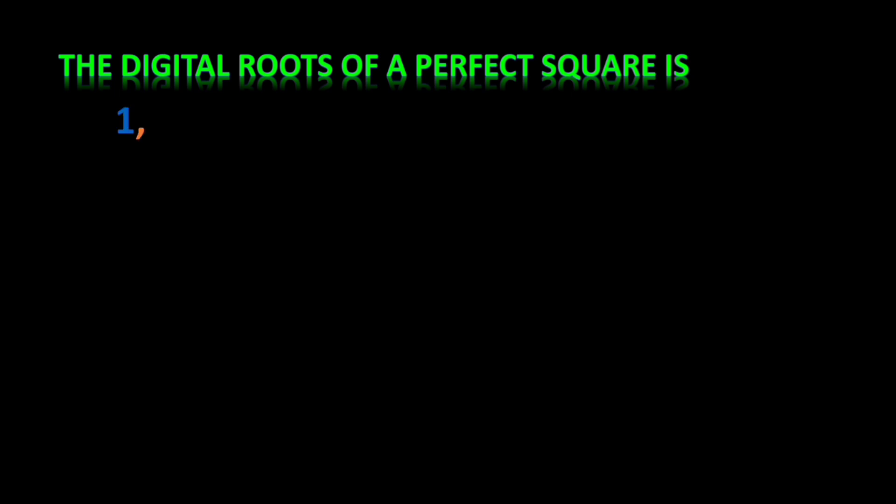Next: the digital root of a perfect square is either 1, 4, 7, or 9. The digital root means we find the sum of the digits of a number, and if necessary keep summing until we get a single digit — that single digit is the digital root.